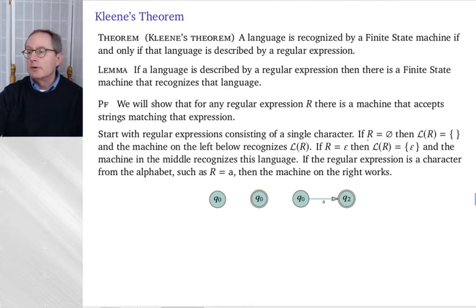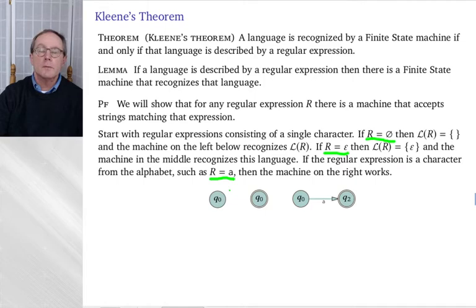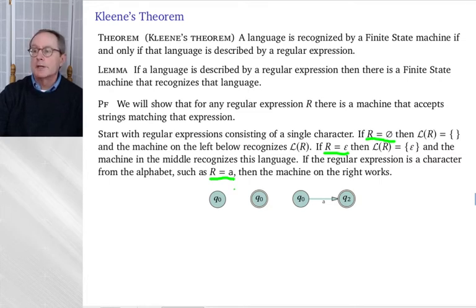If you have a regular expression, there are three ways for it to be small — three base cases. It could consist of the empty set symbol, the empty string symbol epsilon, or a single character from the alphabet. I'm going to produce a finite state machine for each possible case. If the regular expression consists of the empty set symbol, the associated language is empty — I want a machine that recognizes no strings.